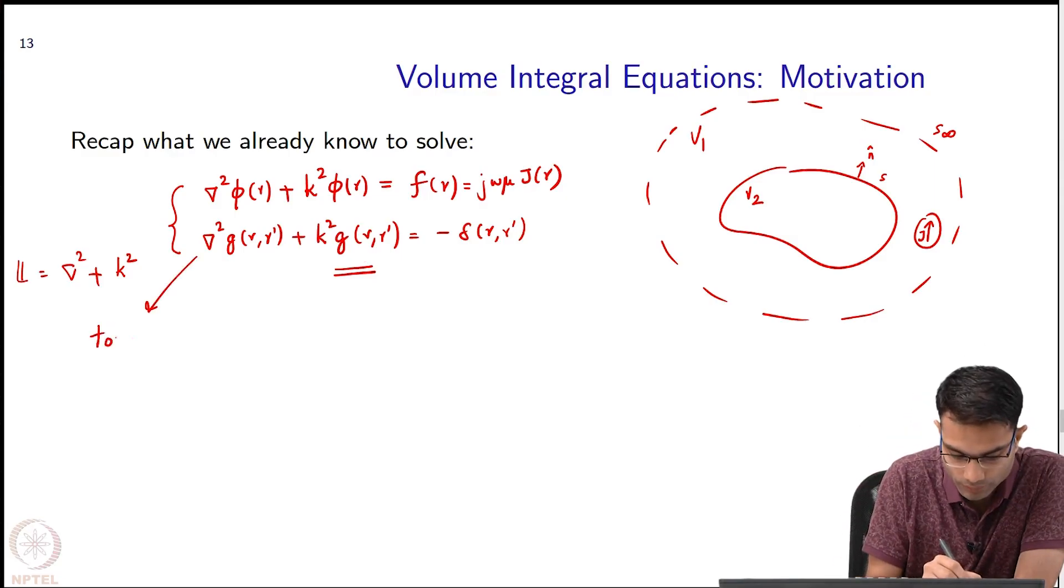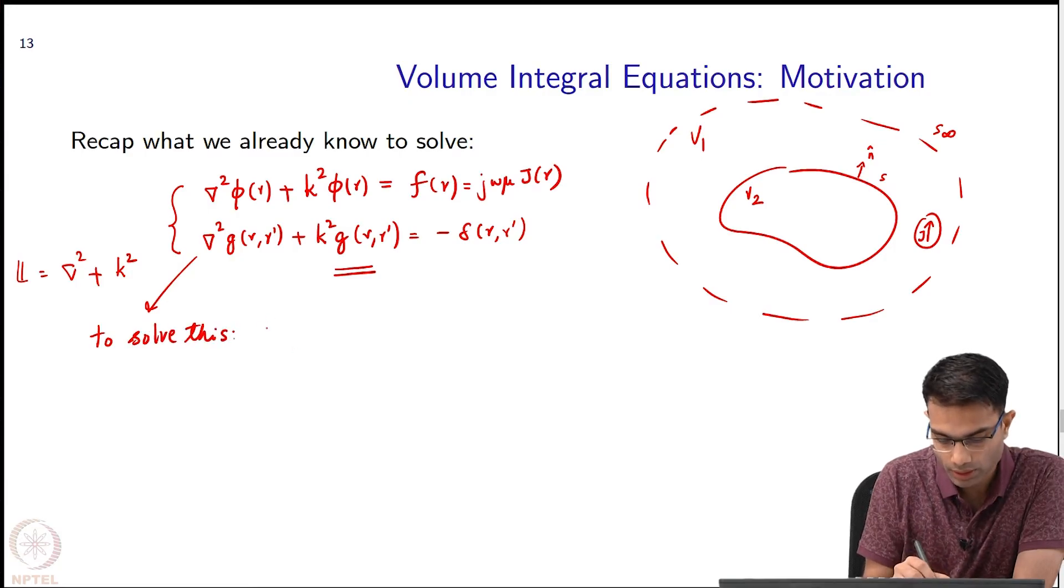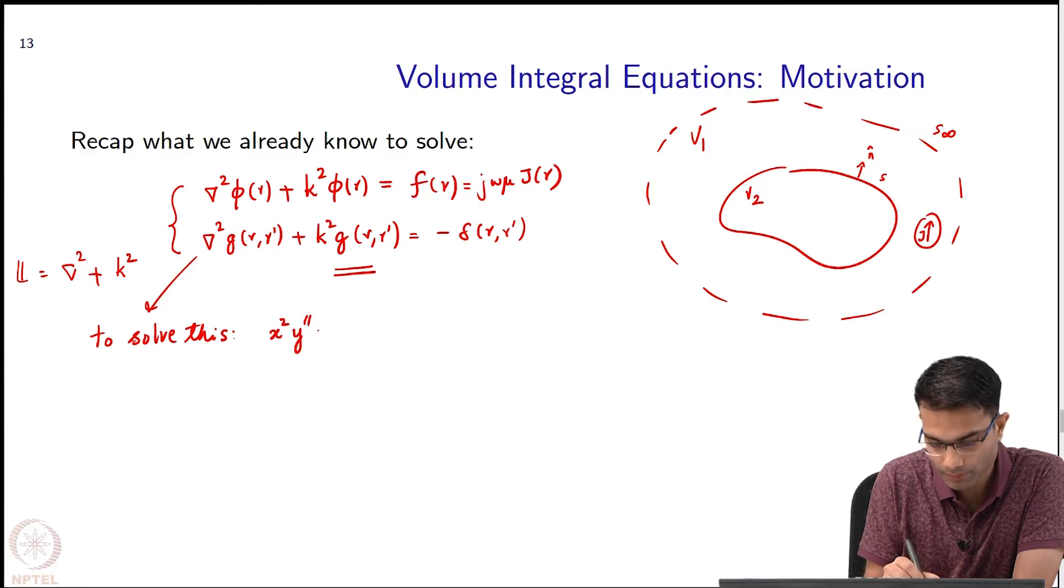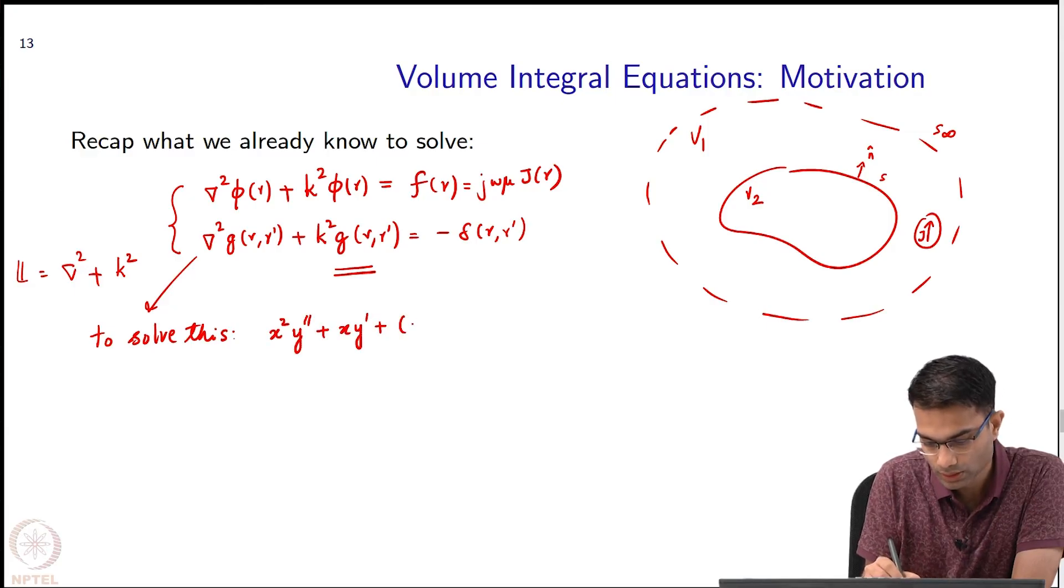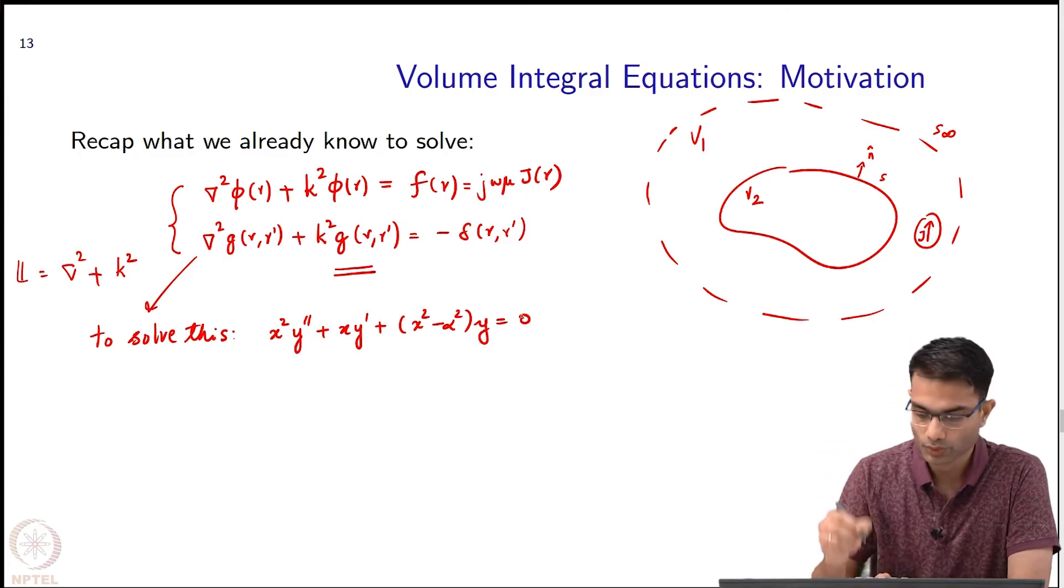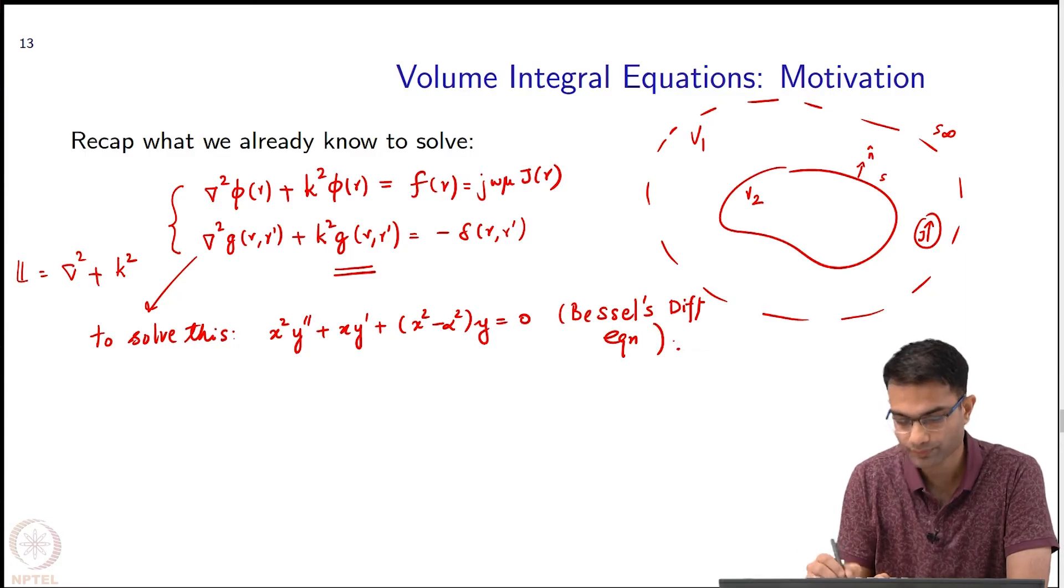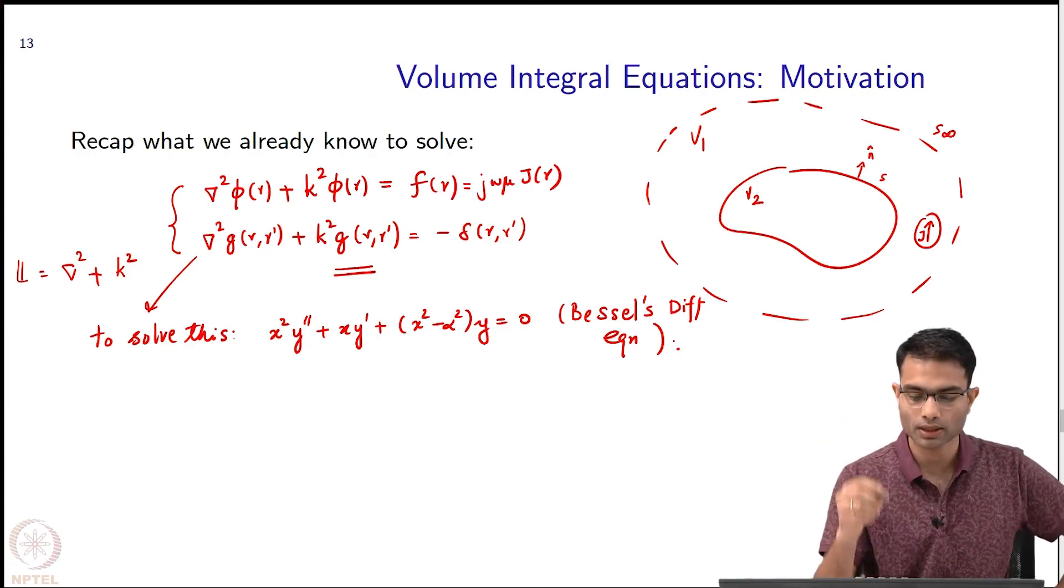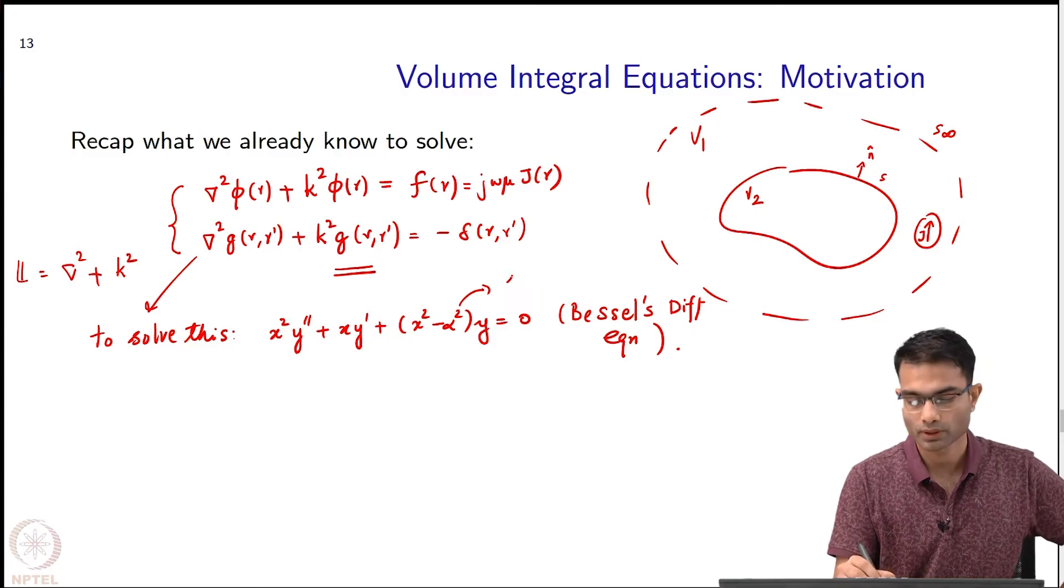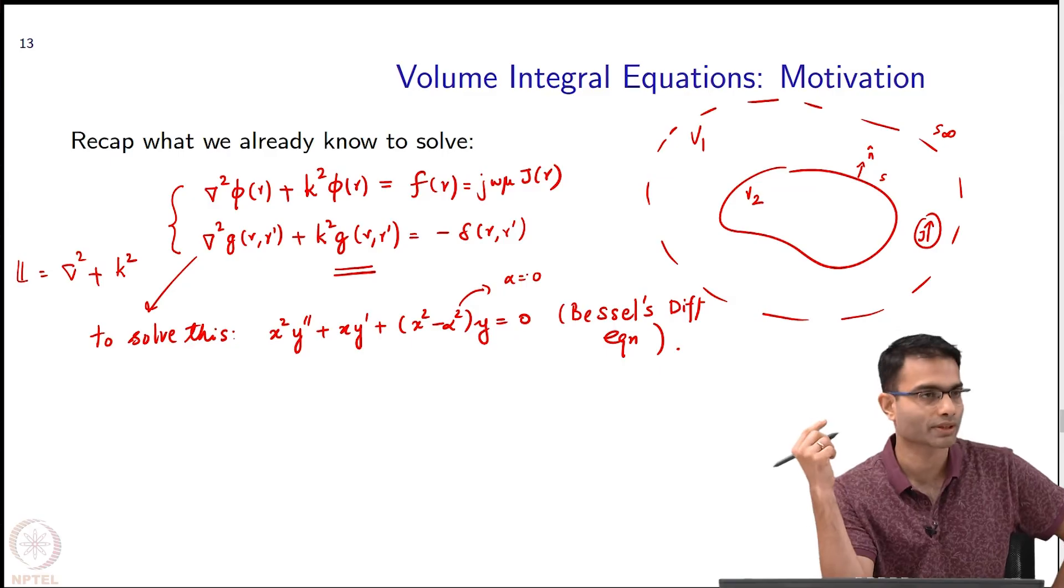That differential equation look like a well known differential equation which is Bessel's differential equation. When I went to solve this I got something that look like x squared y double prime plus x y prime plus x square minus alpha squared y is equal to 0. That was what I called Bessel's differential equation. In our case turned out alpha was 0. That is why our solutions were Hankel 0 1 and Hankel 0 2.